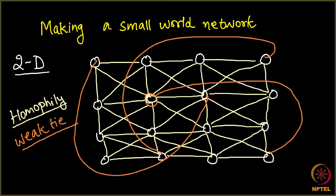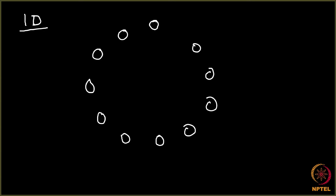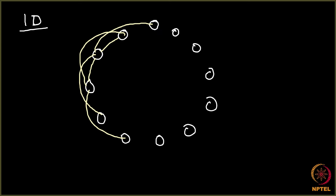This was how we portray a Watts-Strogatz model in two dimensions. We can also portray the same small world network with the model Watts-Strogatz gave in one dimension, which is rather more interesting. In one dimension, we assume the nodes in the network are in the form of a ring. These are the nodes, and again we have certain connections because of homophily — nodes connected to other nodes geographically closer. We can take two on the right hand side and two on the left hand side, and this applies to all nodes.